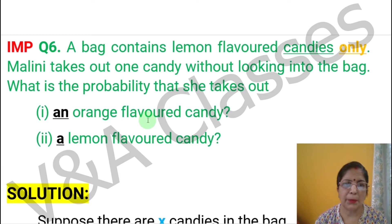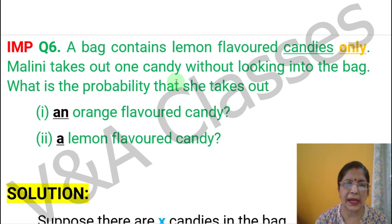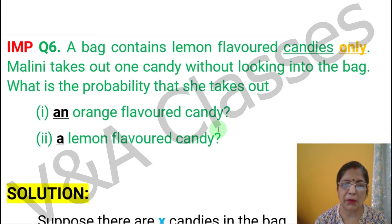This question means that in a bag there are only 11 flavor candies. Malini, without looking into the bag, takes out only one candy from this bag. So we will find what is the probability of taking out an orange flavor candy from this bag.